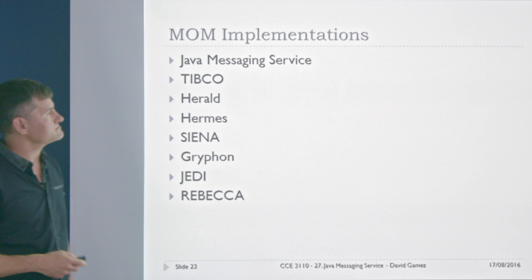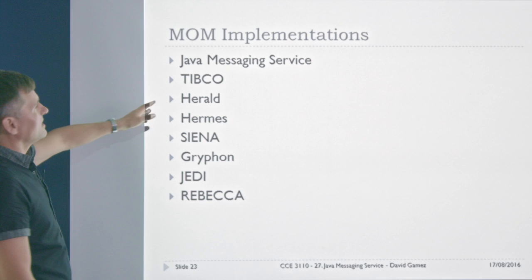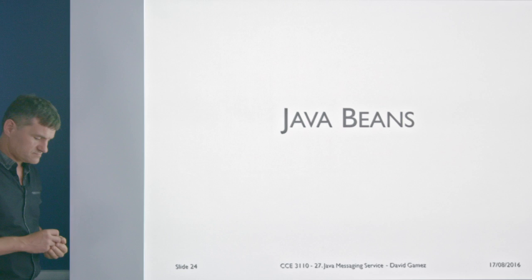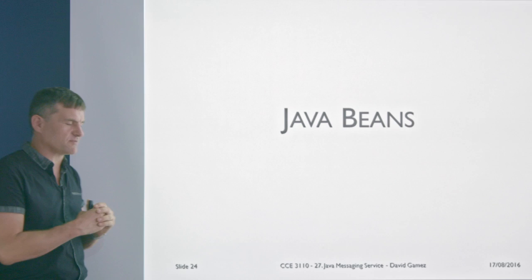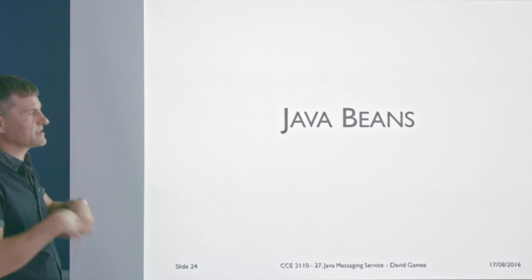There are lots of message-oriented middleware implementations. We're going to focus here on the Java Messaging Service. To understand JMS, you need to understand Java Beans, because Java Beans and dependency injection is the key way in which the whole thing is set up so it can run. So first I'll talk about Java Beans, then explain how JMS actually works.